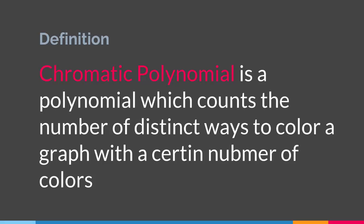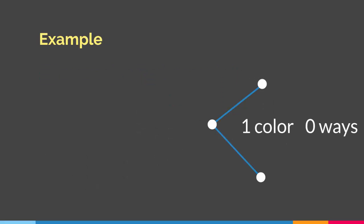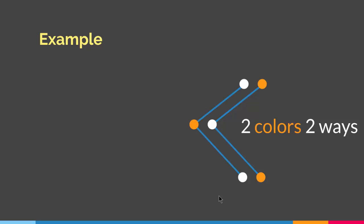To give you an example, let's say we have this graph — as you can see it has three vertices. What happens if I have one color? How many distinct ways can I color this graph? Well there are zero ways to properly color the graph such that no two adjacent vertices will have the same color. That is if I have one color. However, if I have two colors then there are two ways I can properly color the graph.